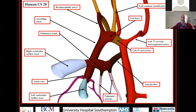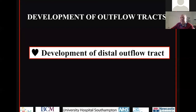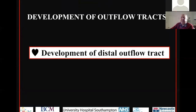Very rapidly we have seen this remodeling going from a bilaterally symmetrical situation to the definitive arrangement, and it is this remodeling that permits us to understand vascular rings and slings on the basis of the Edwards hypothetical double arch. We can talk about that in a subsequent presentation.